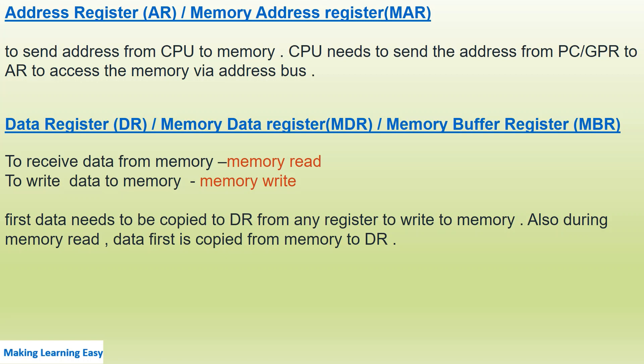The data register, or memory data register or memory buffer register, is used to receive data from memory during a read operation, or to write data to memory during a write operation. Data must first be copied to the DR from any register to write to memory. During a memory read, data is first copied from memory to the DR, then transferred to other general purpose registers as required by the CPU.